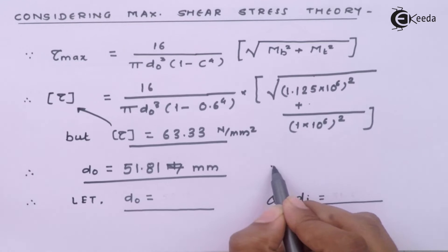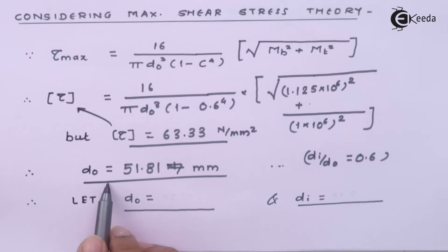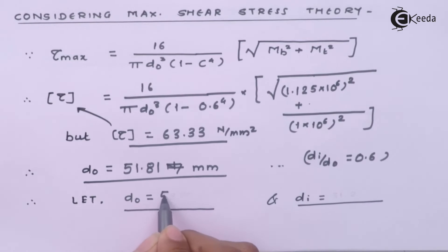Now we again know this relation that inner diameter and outer diameter is 0.6. We can substitute this value back but before that let us go for the preferred value so let us say for this particular thing 52 mm is the preferred value of the outer diameter.